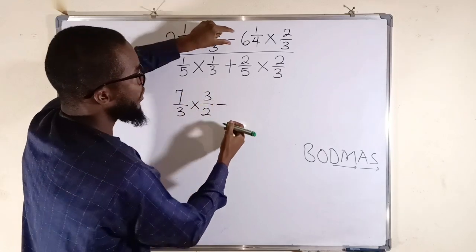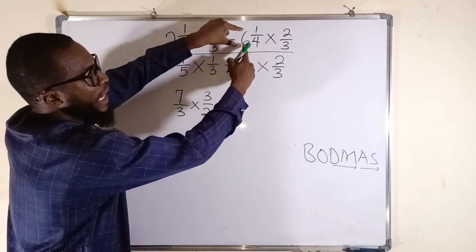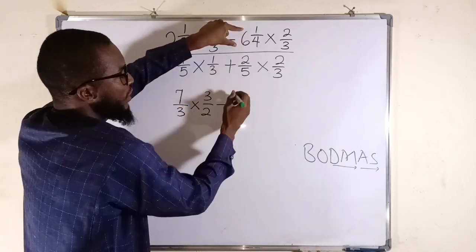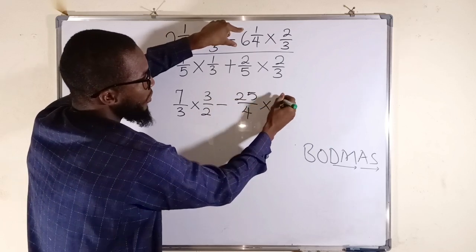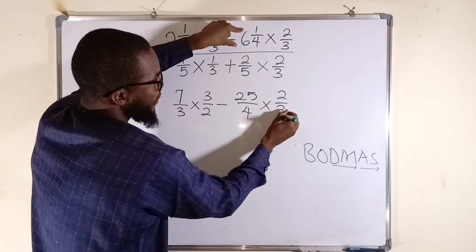Then we subtract. 4 times 6 is 24 plus 1 is 25. Divide by 4. Then you multiply it by 2 divided by 3.